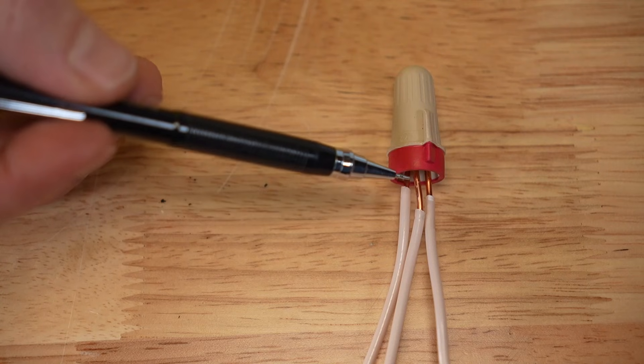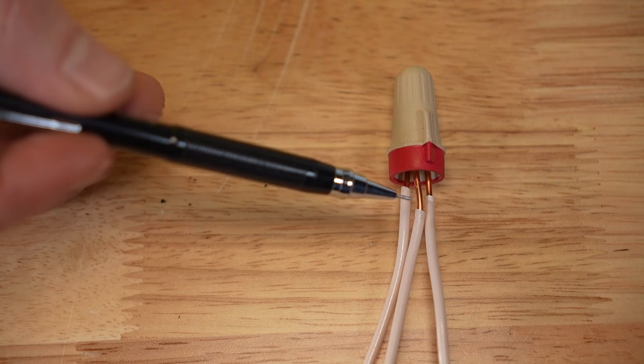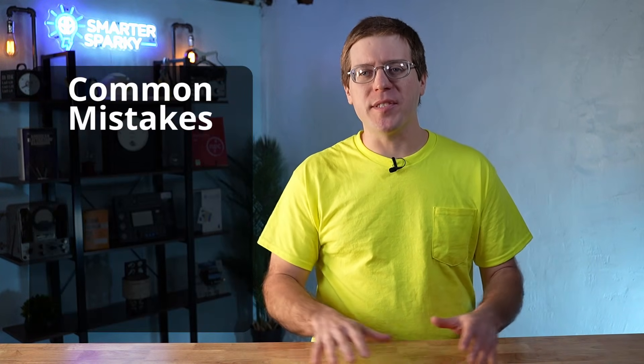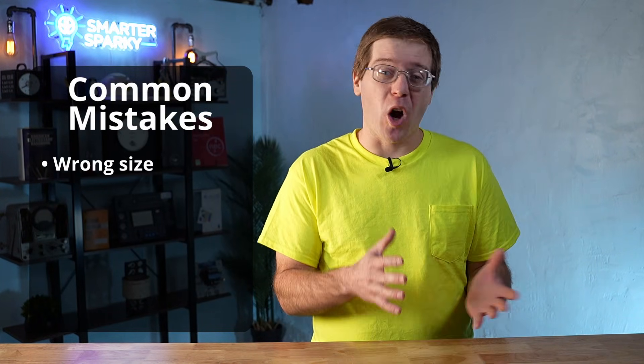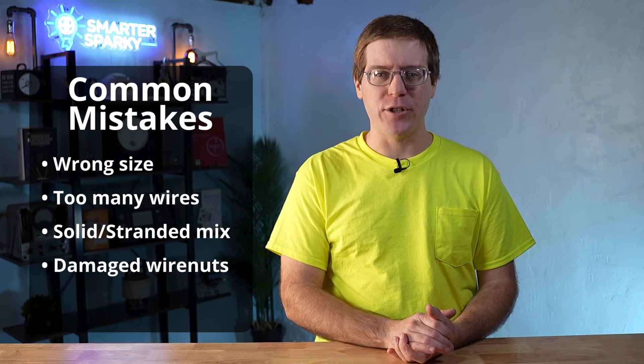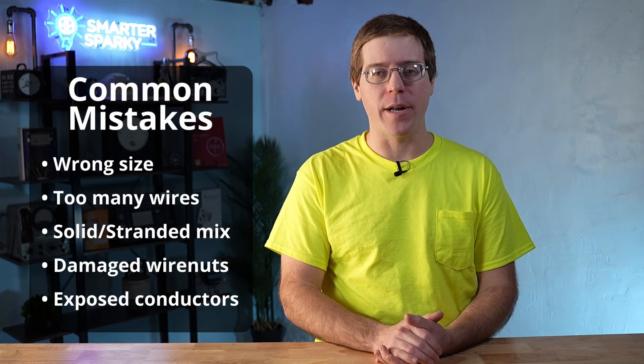You should also perform a visual inspection to ensure that no bare copper is exposed beyond the bottom of the wire nut and that no insulation is pinched up inside the wire nut. Some common mistakes with wire nuts include using the wrong size, putting too many wires in, mixing solid and stranded conductors incorrectly, reusing damaged or stretched out wire nuts, or leaving exposed copper beyond the bottom of the wire nut.